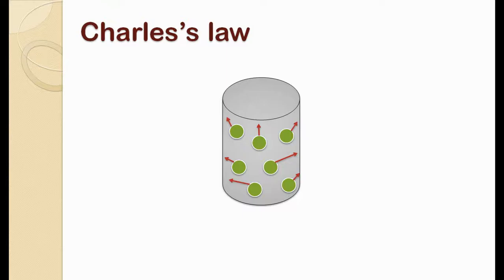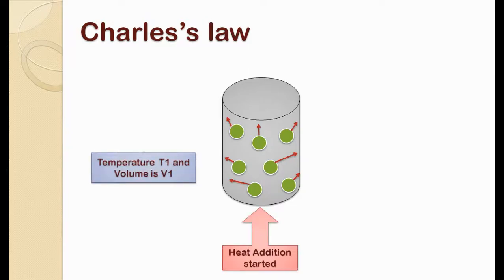Consider the example of a thin cylinder which is filled with gas. The walls of cylinder are very flexible and thin that it gets converted into any shape so as to maintain gas pressure constant. Right now the temperature of gas is T1 and volume of cylinder is V1.